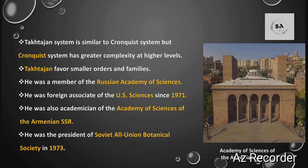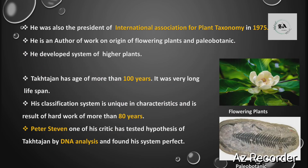Takhtajan was a member of the Russian Academy of Sciences. He was also a Foreign Associate of the US Academy of Sciences in 1971, and served as an Academician in the Academy of Sciences of Armenian SSR. He was President of the Soviet All-Union Botanical Society, and in 1973 became President of the International Association of Plant Taxonomy in 1975. Takhtajan did extensive work on flowering plants and paleobotanic papers.